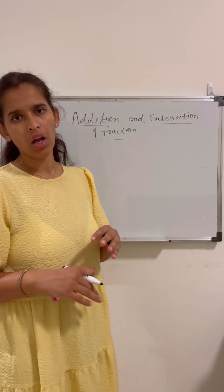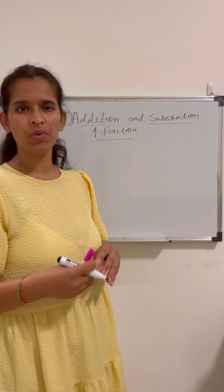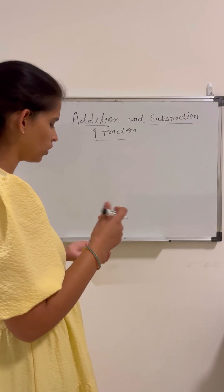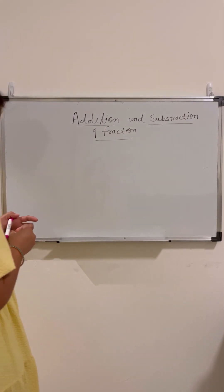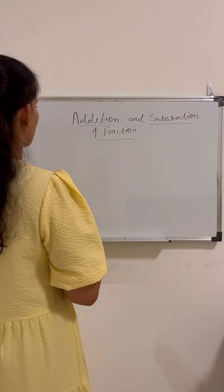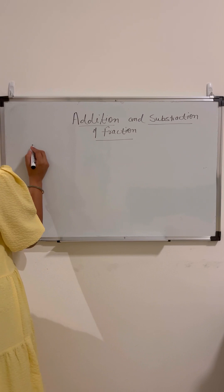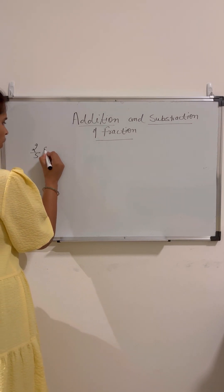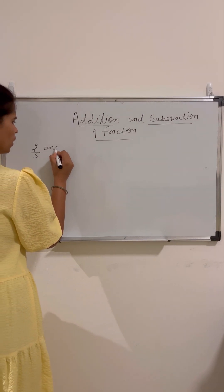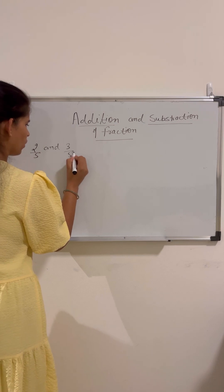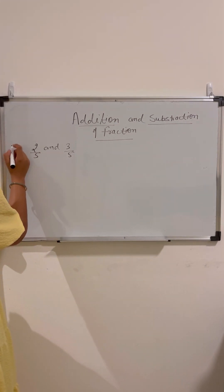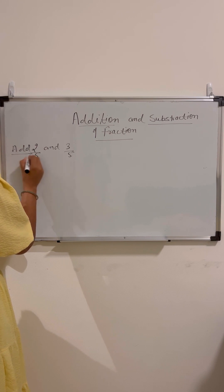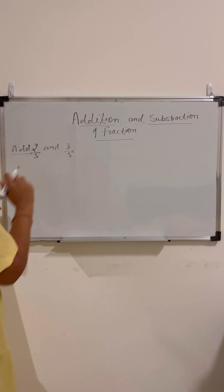In this lesson we will learn how to add two fractions or how we can subtract one fraction from another. We will learn how to solve these two types of problems. Now I have two fractions: 2 by 5 and 3 by 5. First, let us add 2 by 5 and 3 by 5.